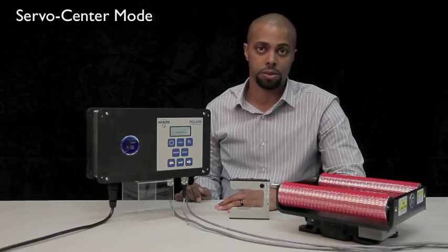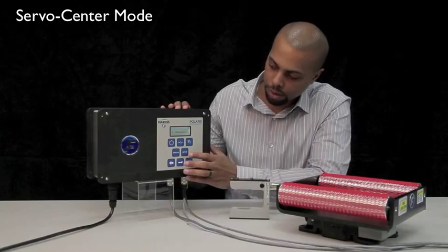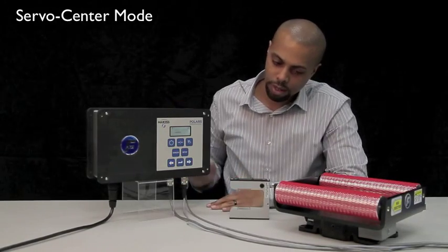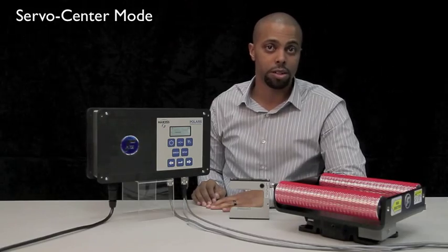To put the system in servo center mode, press the servo center button labeled B. Now the system is on machine line center.